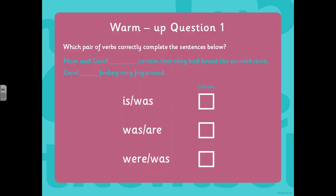Let's have a look at some warm-up questions then on this topic. Write the subheading 'warm-up question one' in your English books and have a go at that question. Can you match the pair of verbs that should complete that sentence correctly? The answer would be: 'Mum and Carol were certain that they had heard the air raid siren. Carol was feeling very frightened.' You would need were because you've got two people, so it's plural. And then at the end you would need was because it's just Carol on her own — it's singular.